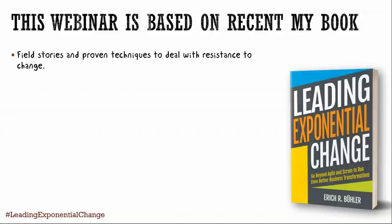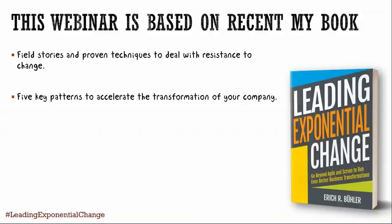At some point I said, let's try to see if we can write a book about how to make change in a company and accelerate it. I talked to four well-known people and asked them to write stories for the book to include different perspectives. I include five key partners to accelerate transformation. Something you'll learn today is that there are ways to accelerate a transformation even in companies where people are very reluctant to new mindsets or ideas.